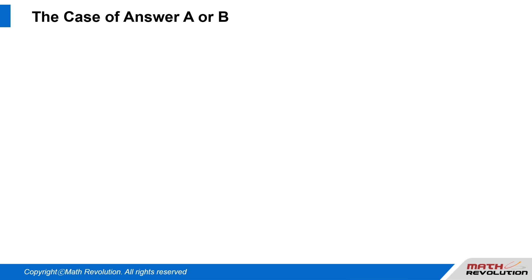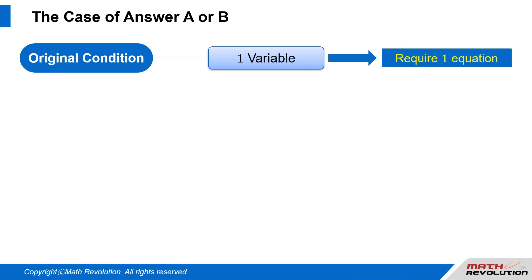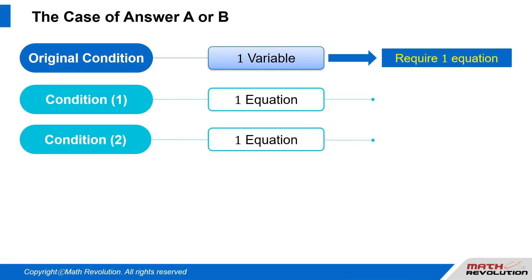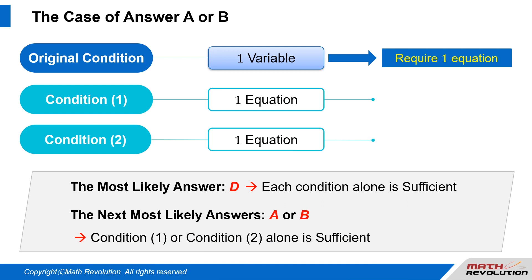The case of answer A or B. For a DS question with one variable in the original condition, one variable would generally require one equation to find its value. Each condition should give us one equation and should be sufficient independently. So we should logically get answer D. The most likely answer is D if there is one variable in the original condition.